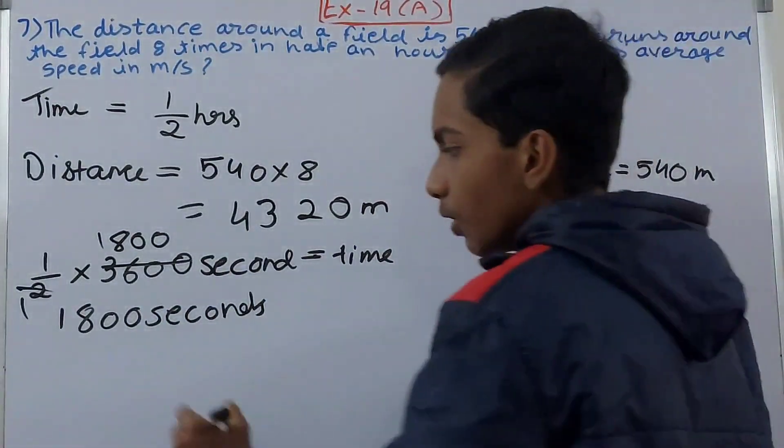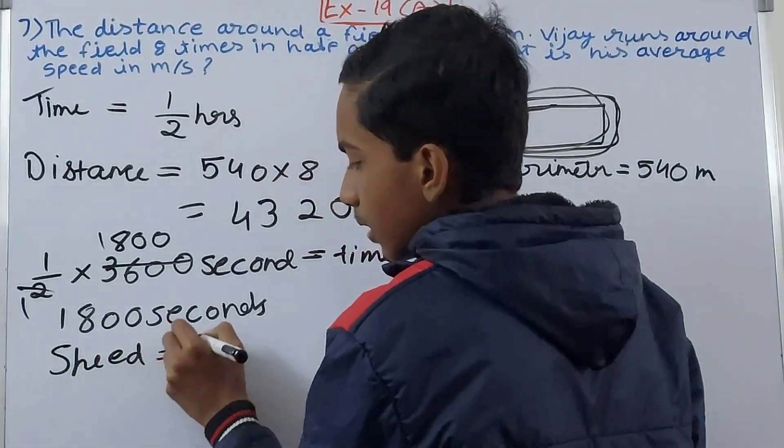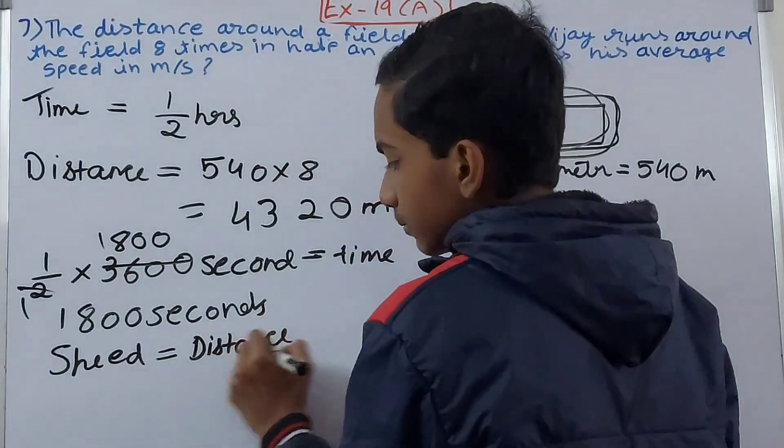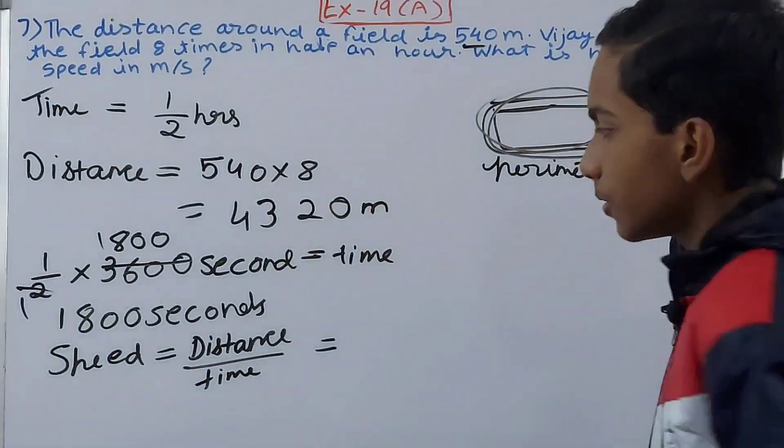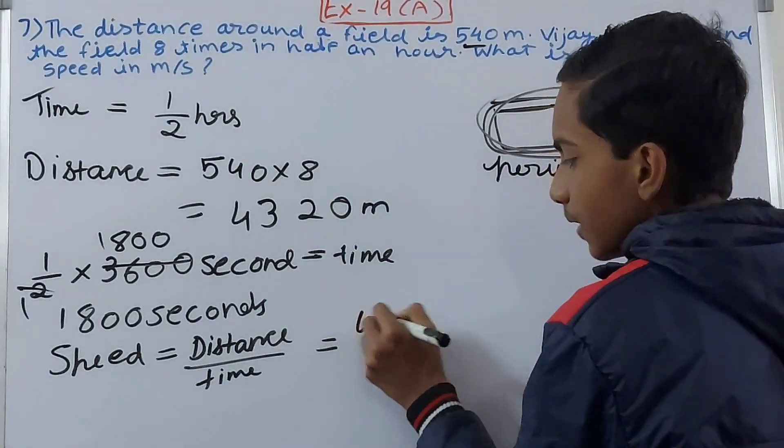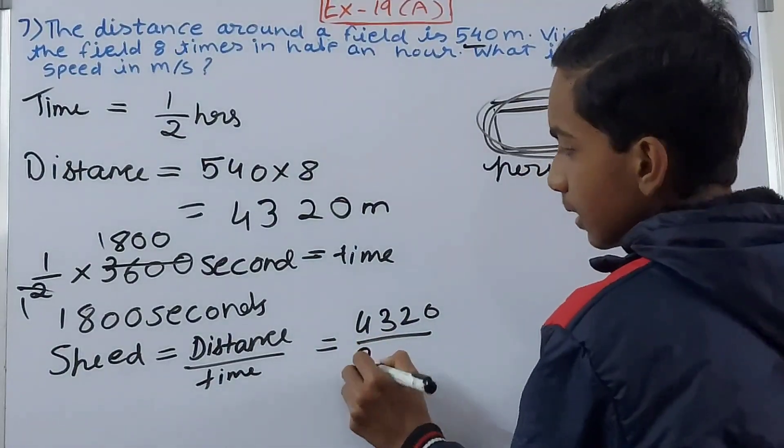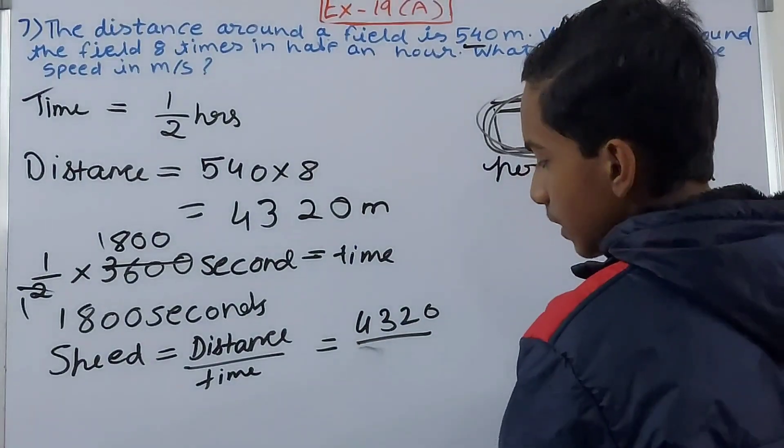So we know what the speed is equal to. Speed equals to distance upon time - distance upon time. So the distance is 4320 meters. Time is 1800 seconds. So 1800 seconds.